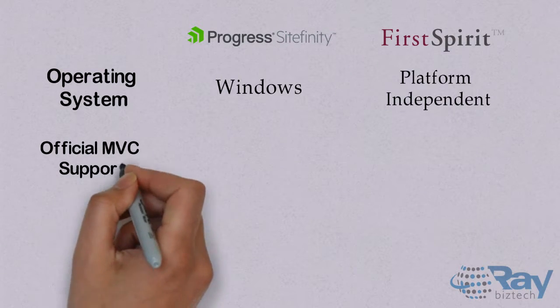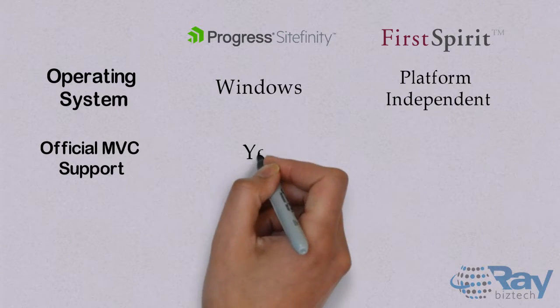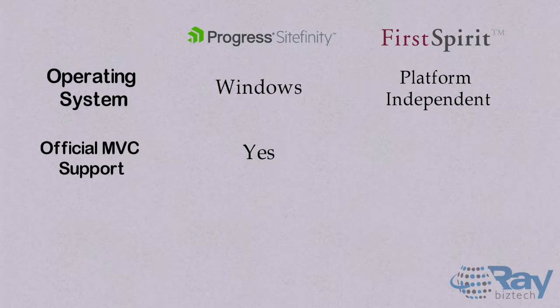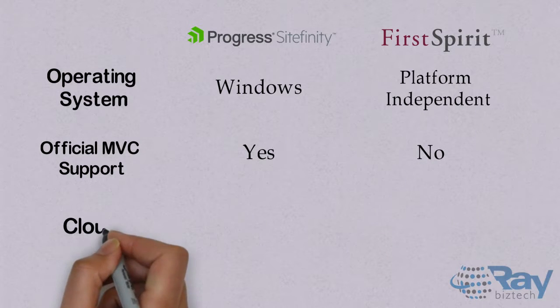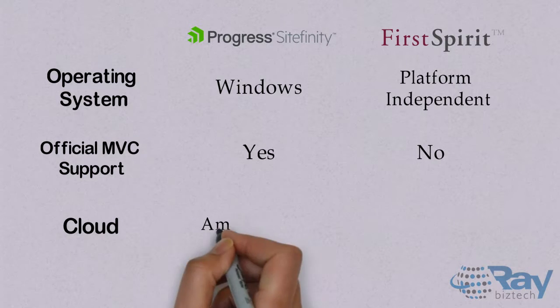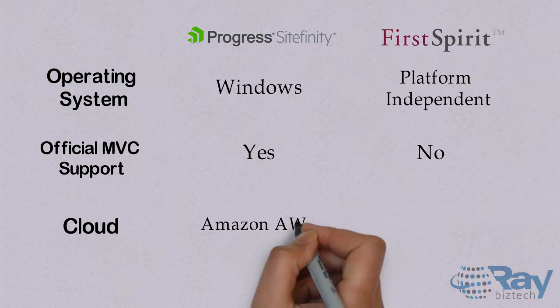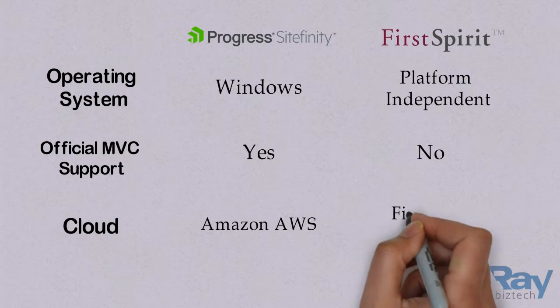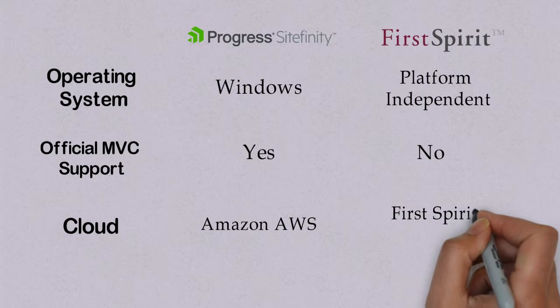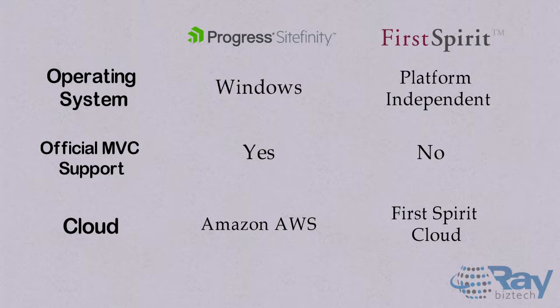Operating System: it is Windows for Sightfinity and Platform Independent for First Spirit. Official MVC Support is available for Sightfinity but not available for First Spirit. Cloud: it is Amazon AWS for Sightfinity and First Spirit Cloud for First Spirit.